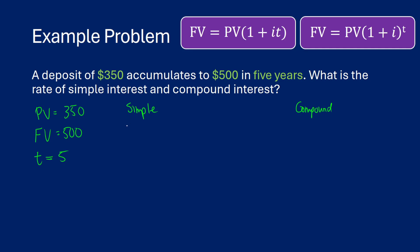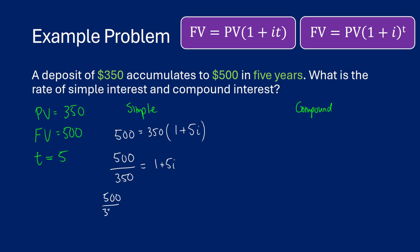For simple interest: 500 equals 350 times one plus i times t. Since t is 5, that's 350 times one plus 5i. So 500 divided by 350 equals one plus 5i, meaning 500 over 350 minus 1 equals 5i. Dividing both sides by 5 gives us our interest rate. Plugging in: 500 divided by 350 minus 1, divided by 5 gives us 0.0857 — about an 8.6% interest rate for simple interest.